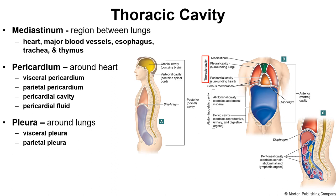Now let's talk about the thoracic cavity, highlighted in red. The mediastinum, highlighted in green, is the region between the lungs. It contains the heart, major blood vessels, esophagus, trachea, and thymus. It extends down the middle — media meaning the middle area.